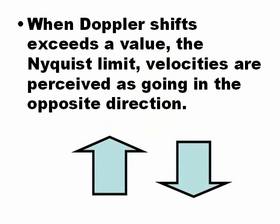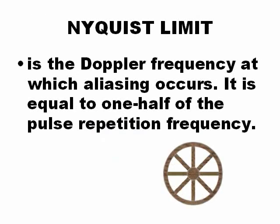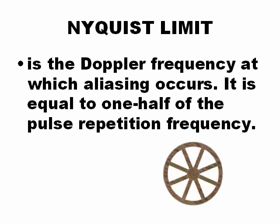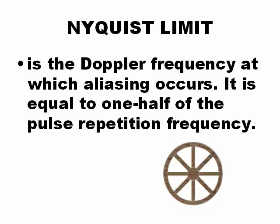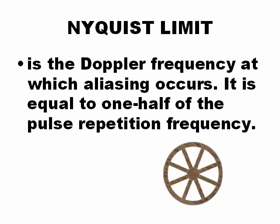When the Doppler signal exceeds an accepted value, velocities beyond the Nyquist limit are perceived as going in the opposite direction. This is the Nyquist limit. The Nyquist limit is equal to half of the pulse repetition frequency. Remember, you can change the pulse repetition frequency when you change the depth at which you are working — you can shift the Nyquist limit by working more superficially.